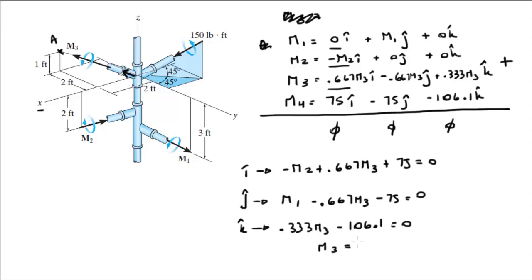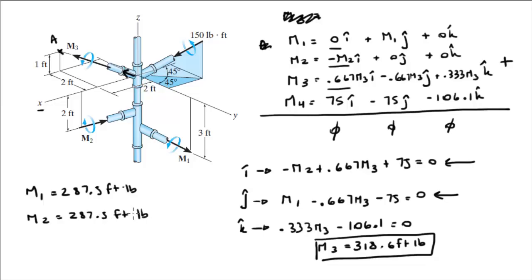And now that we have M3, you can plug them into this equation and find M1, and you're going to get that M1 is equal to 287.5 foot-pounds. And you can plug it into this equation, and you're going to get that M2 is equal to 287.5 foot-pounds. So those are the magnitudes of M1, M2, and M3, so that the resultant moment onto this assembly is 0. So final answer for M1, final answer for M2, and final answer for M3.